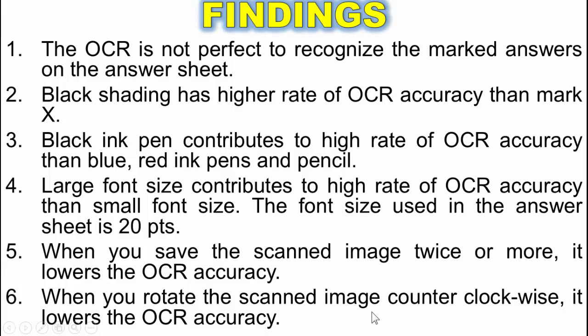Number one: the OCR is not perfect to recognize the marked answers on the answer sheet. Two: black shading has a higher rate of OCR accuracy than Mark X. Three: black ink pen contributes to a higher rate of OCR accuracy than blue and red ink pens and pencil. Four: large font size contributes to a higher rate of OCR accuracy than small font size — the font size used in the answer sheet is 20 points. Five: when you save the scanned image twice or more, it lowers the OCR accuracy. Finally: when you rotate the scanned image counterclockwise, it lowers the OCR accuracy.